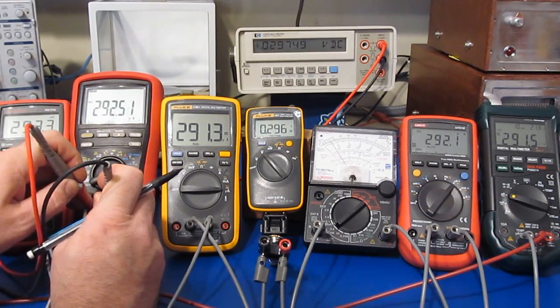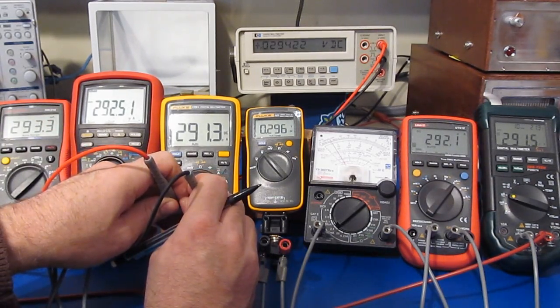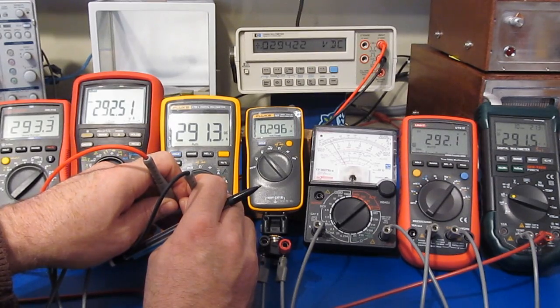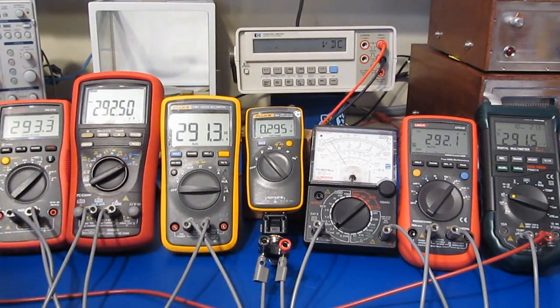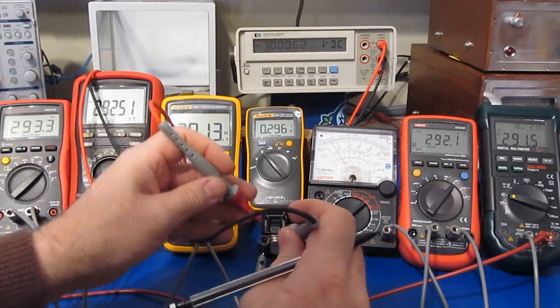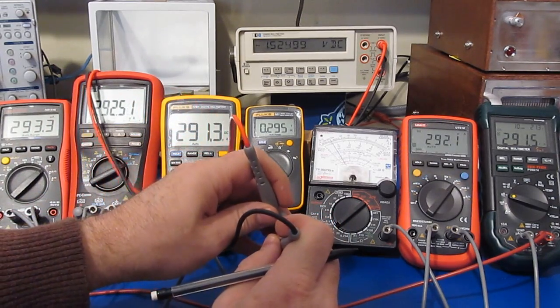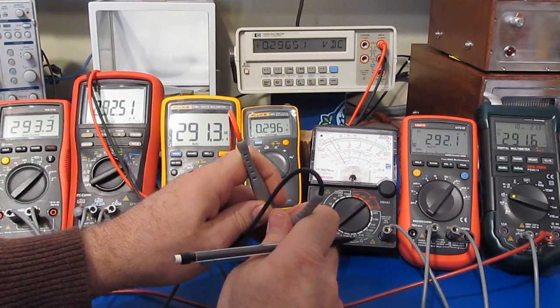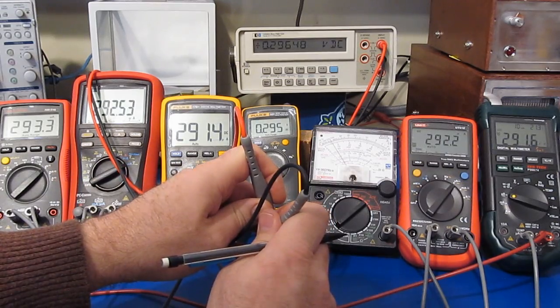This is the 17B+. You can see it's 29.4. Our little Fluke 101. Should be pretty high. 296.